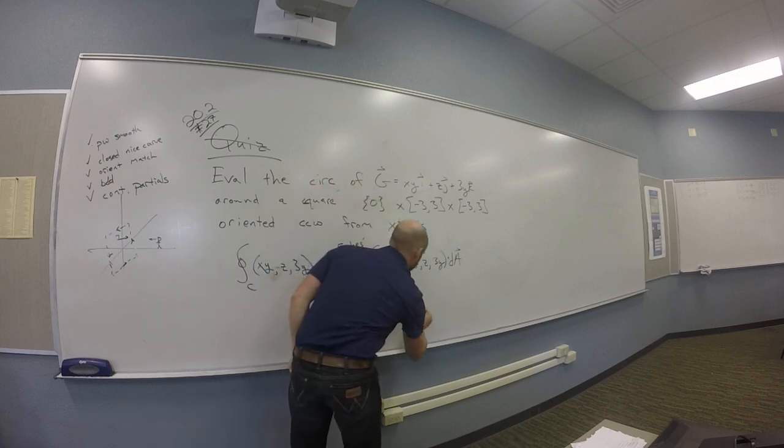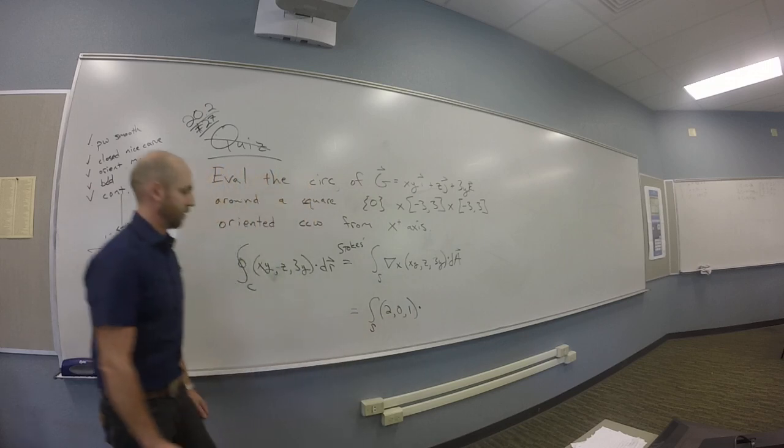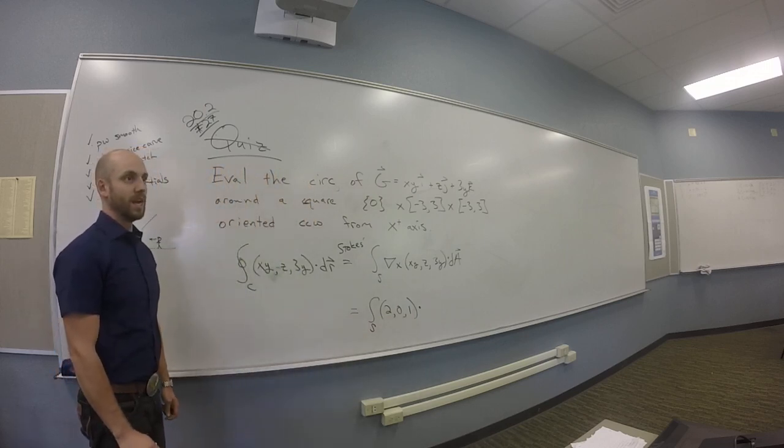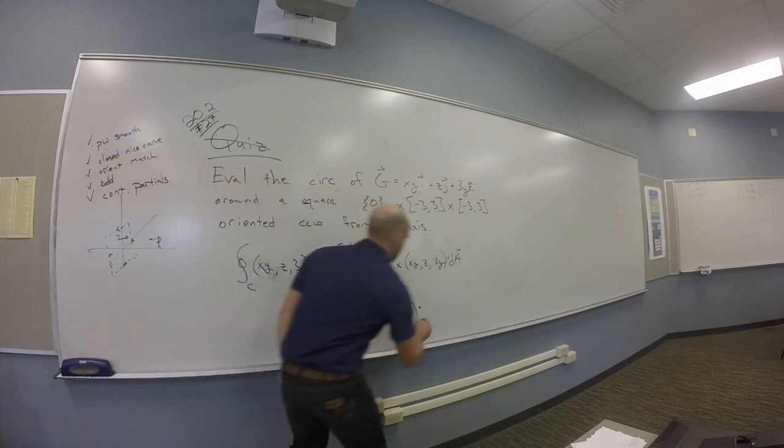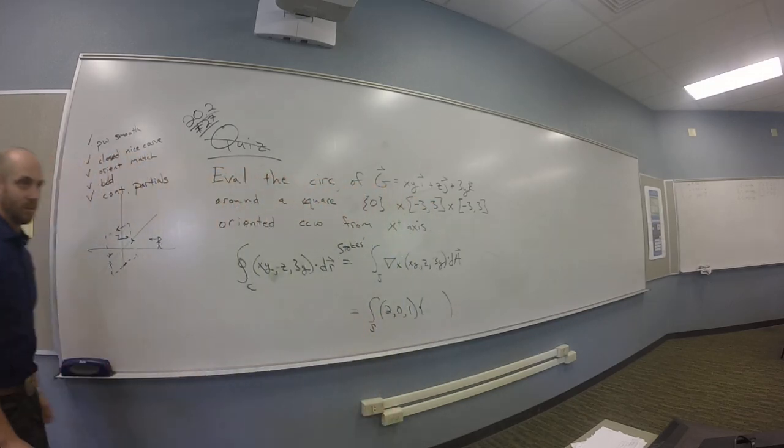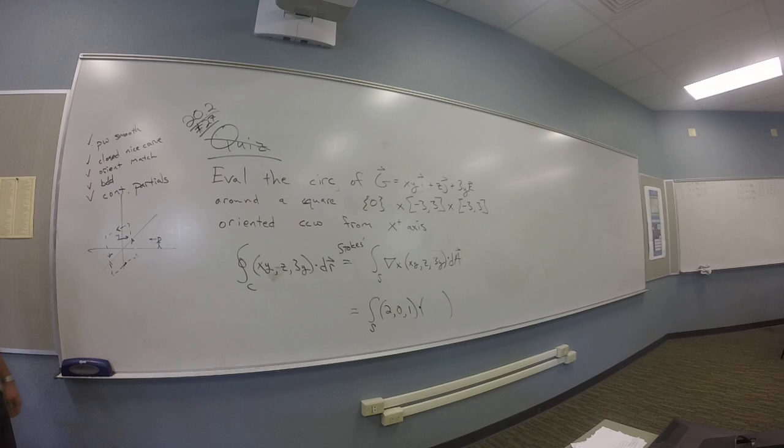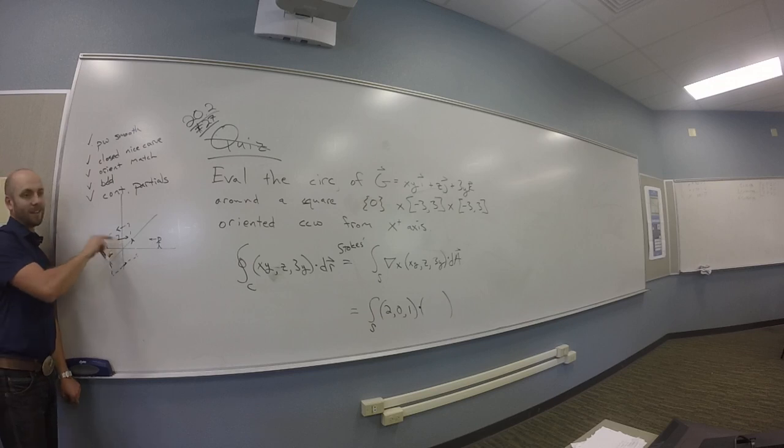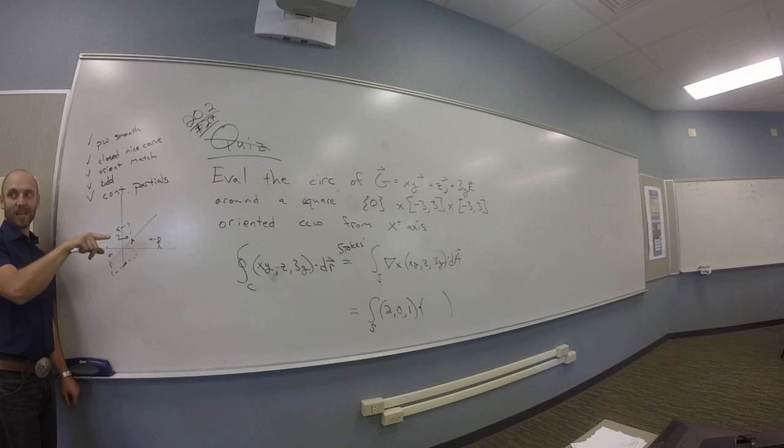And then we need to dot with d area, right? Unit normal. Okay. What's your unit normal of that square, though? 1, 0, 0. Yeah. So you got a vector, 1, 0, 0. So you need a vector, right, that's unit long and points out parallel to the positive x-axis, right? So 1, 0, 0 is just, yeah. That's just the i vector.